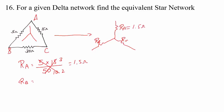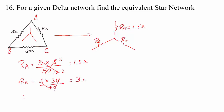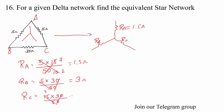Similarly, Rb = (R_AB × R_BC) / 50 = (5 × 30) / 50 = 3 ohms. And Rc = (R_AC × R_BC) / 50 = (15 × 30) / 50 = 9 ohms.